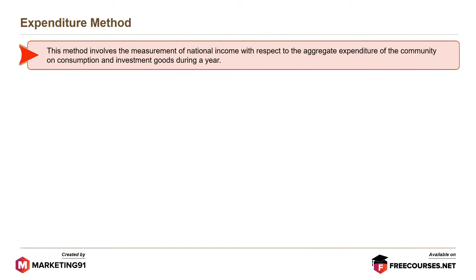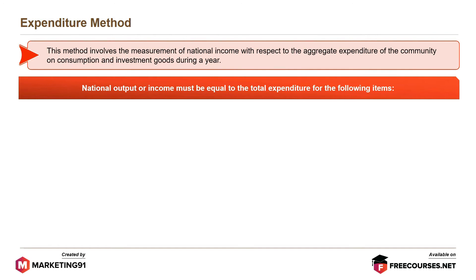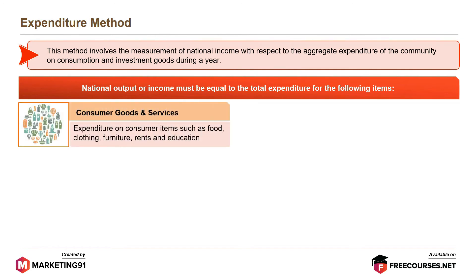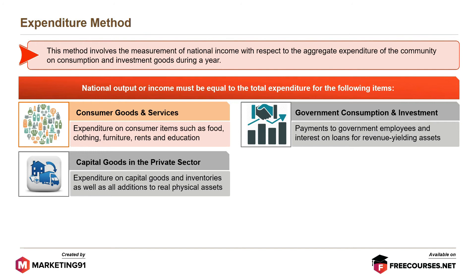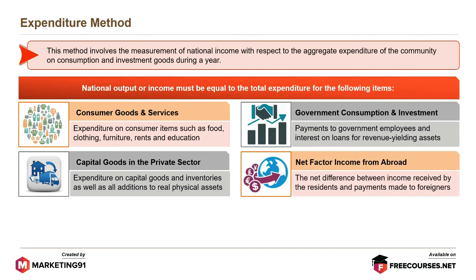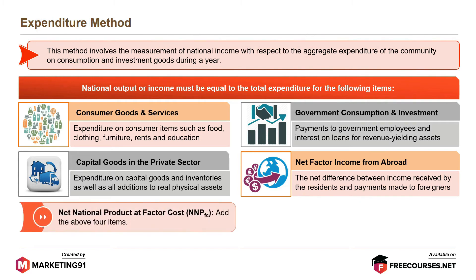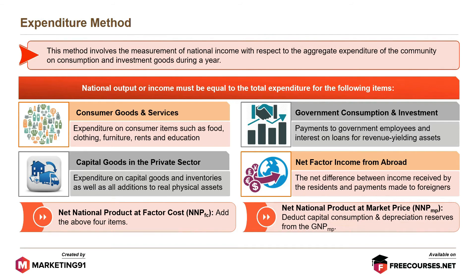The last type is the expenditure method. This method involves the measurement of national income with respect to the aggregate expenditure of the community on consumption and investment goods during a year. National output or income must equal the total expenditure on: consumer goods and services such as food, clothing, furniture, rents and education; capital goods in the private sector, including expenditure on capital goods, inventories, and additions to real physical assets; government consumption and investment, including payments to government employees and interest on loans for revenue-yielding assets; and net factor income from abroad, which is the net difference between income received by residents and payments made to foreigners. NNPFC is calculated by adding the above four items. NNPMP is obtained by deducting capital consumption and depreciation reserves from GNPMP.